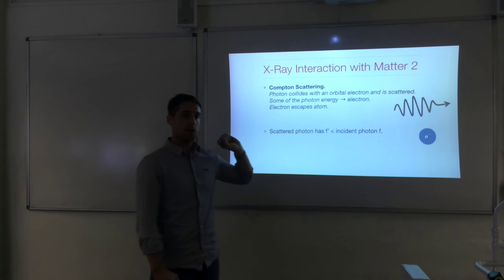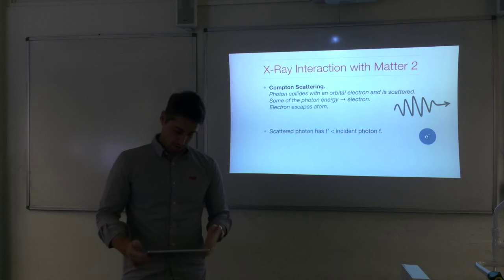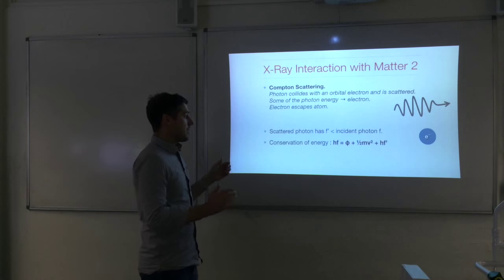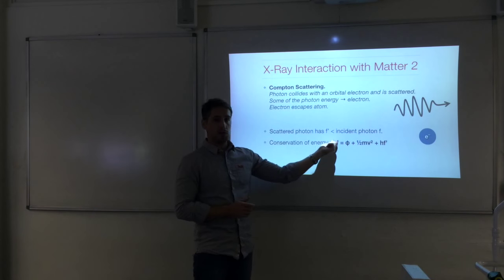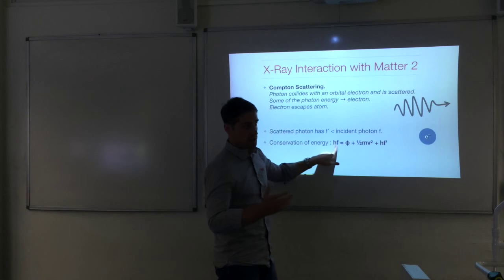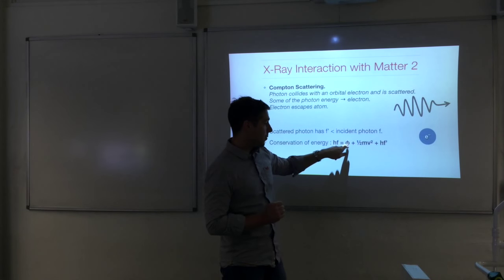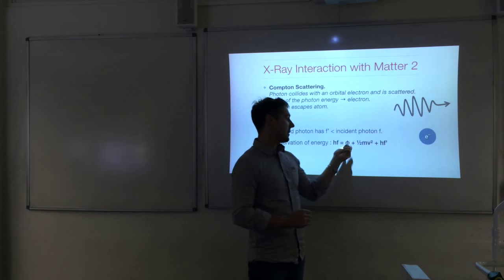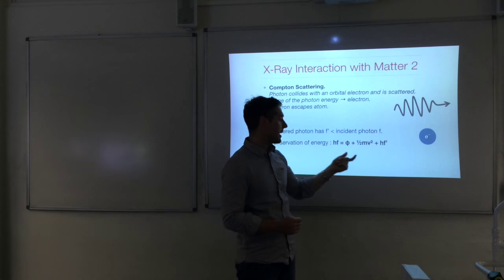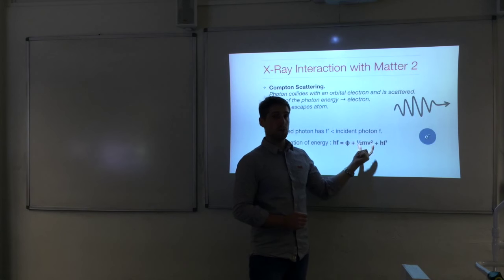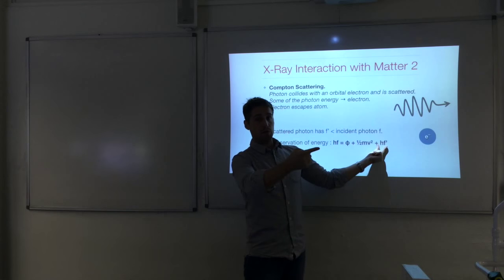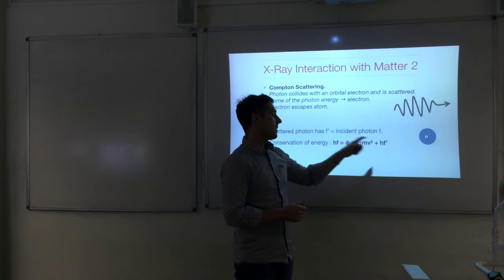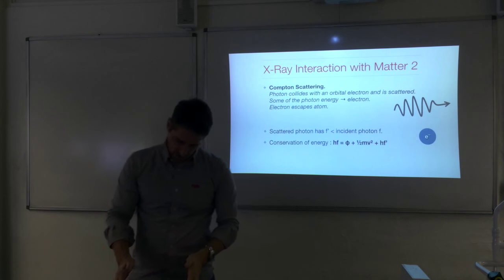F prime here indicates the scattered photon's frequency. From conservation of energy, we have the incident photon with energy HF. There's a work function involved because the electron is being removed from the atom, so we give the electron enough energy to escape with some kinetic energy. And then we also have the scattered photon with longer wavelength or lower frequency, so its energy HF prime is included as well.